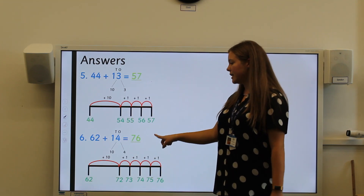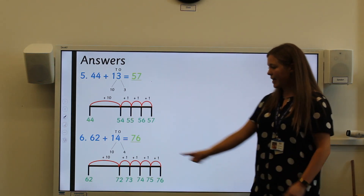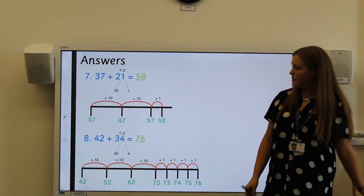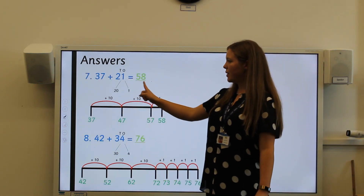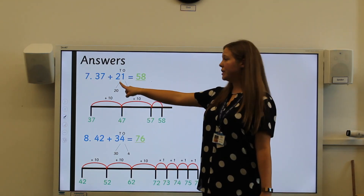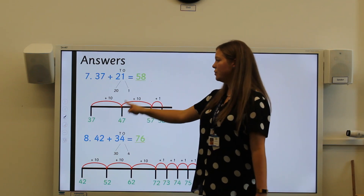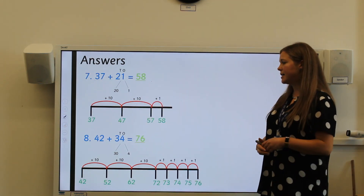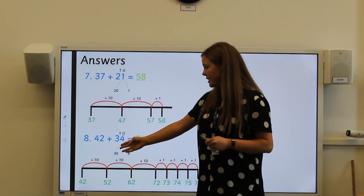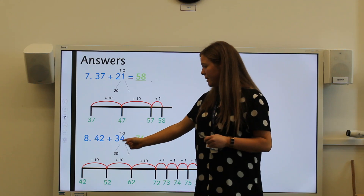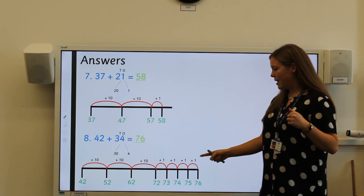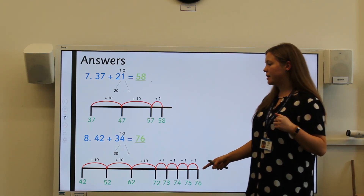Number six: 62 add 14 equals 76 — again I partitioned the second number to be more efficient. Number seven: 37 add 21 equals 58 — when I partitioned, I had two tens, so I made two jumps of ten. Number eight: 42 add 34 — I partitioned into three tens and four ones, making three jumps of ten and then four jumps of one, to find the answer 76.